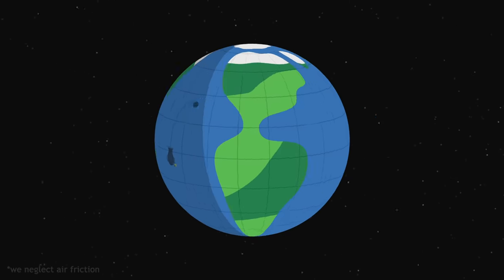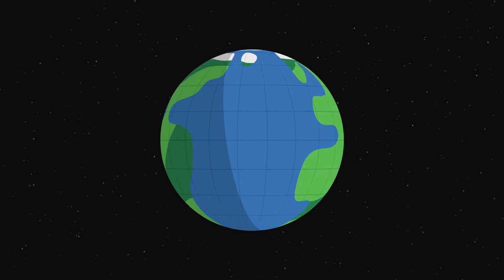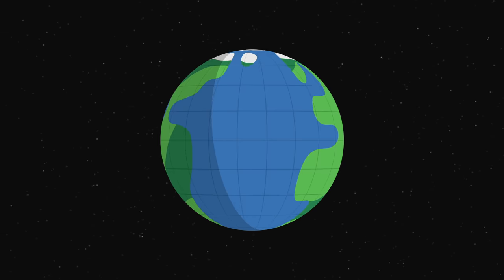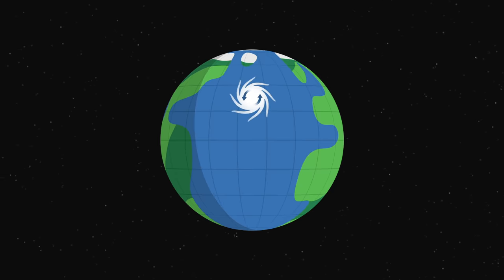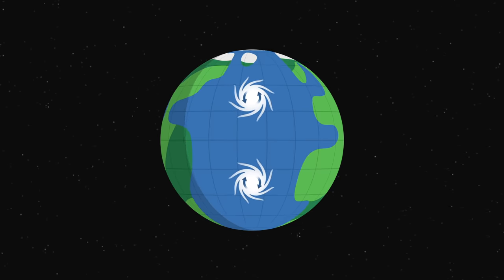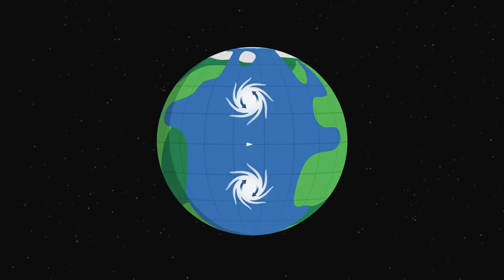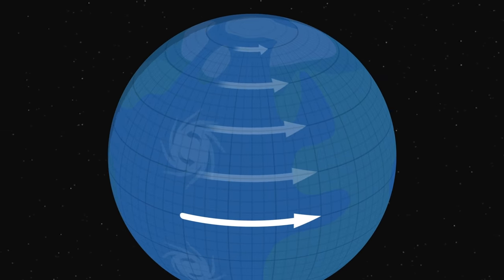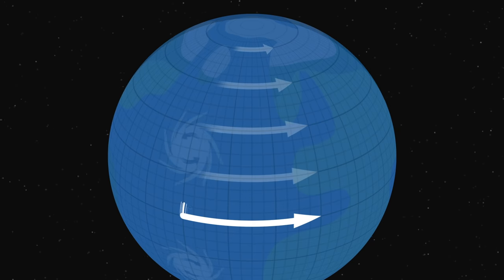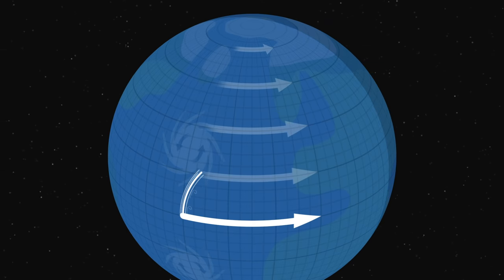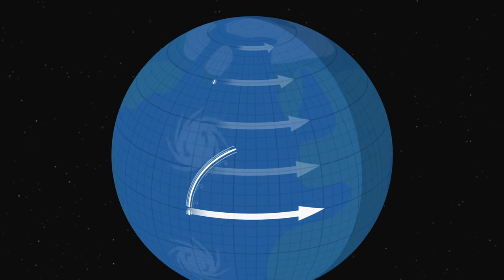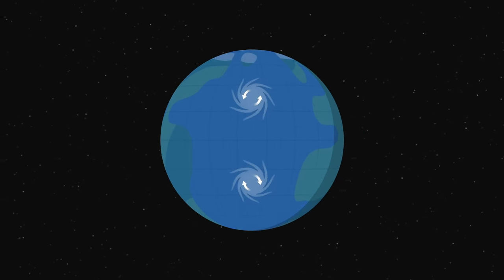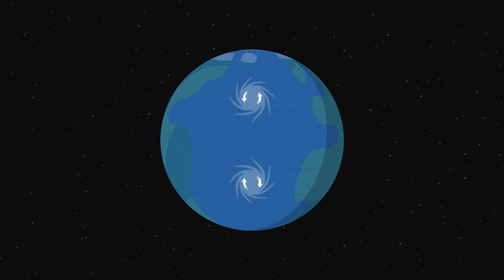The Coriolis effect also applies to the motion of air in the atmosphere, and explains why hurricanes spin in one direction in the northern hemisphere and in the opposite direction in the southern hemisphere. The air that circulates near the equator moves faster than the air closer to the poles. When the winds drift away from the equator, they conserve their initial speed and therefore get ahead of the Earth's spin. This difference of speed results in a rotating motion, explaining the direction in which hurricanes spin.